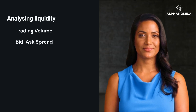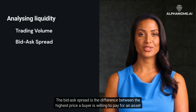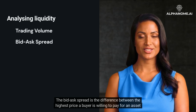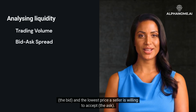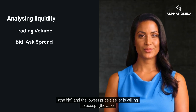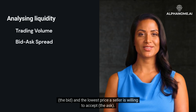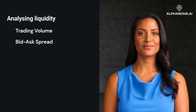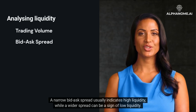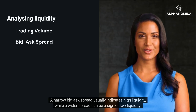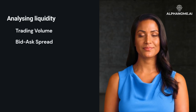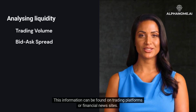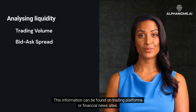Bid-Ask Spread: The bid-ask spread is the difference between the highest price a buyer is willing to pay for an asset — the bid — and the lowest price a seller is willing to accept — the ask. A narrow bid-ask spread usually indicates high liquidity, while a wider spread can be a sign of low liquidity. This information can be found on trading platforms or financial news sites.